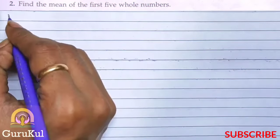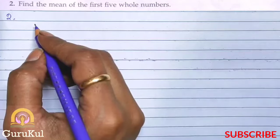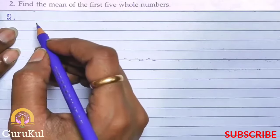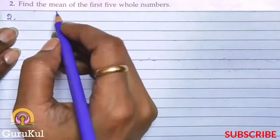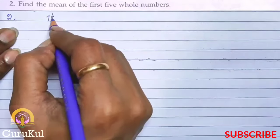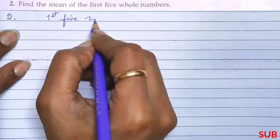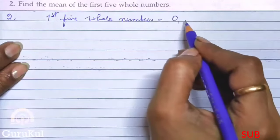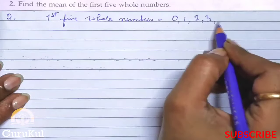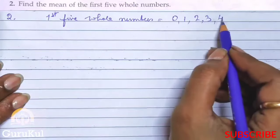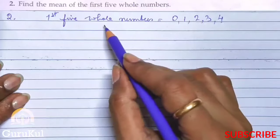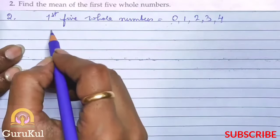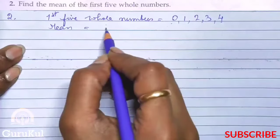Question number 2. We have to find the mean of the first 5 whole numbers. So whole numbers, what happens? Numbers starting from 0, right? So we have to find the mean of the first 5 whole numbers. The first 5 whole numbers are 0, 1, 2, 3 and 4. Just because it is a whole number, that is why we have started from 0. Clear? Now we have to find the mean. So what is the mean formula?